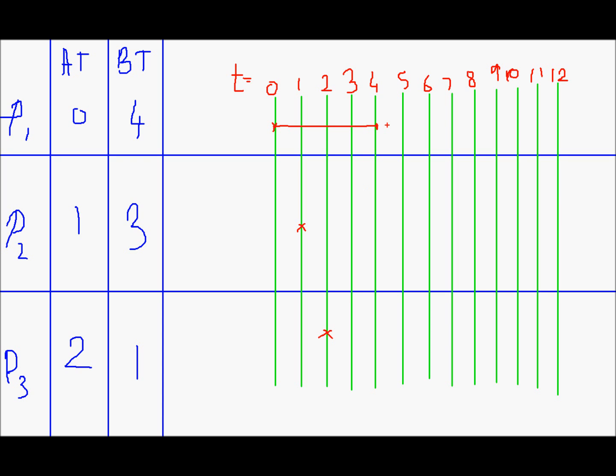Now by this time two processes have arrived P2 and P3 and out of P2 and P3 the process with the shortest burst time is P3. Its burst time is 1. So at this instant P3 will execute. From here till here, that is from 4 to 5, it will be P3's execution.